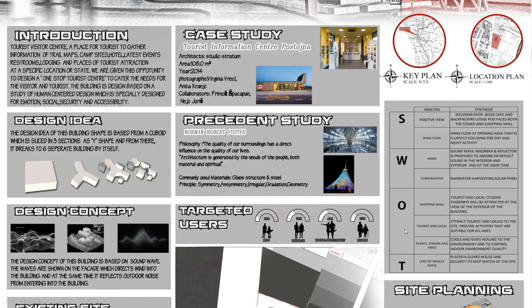Next is the building design, based on human-centered design, which is a specialty design for emotion, social security, and accessibility. The design idea was made from a cuboid with three sections, and from that section I split it into six separate buildings.